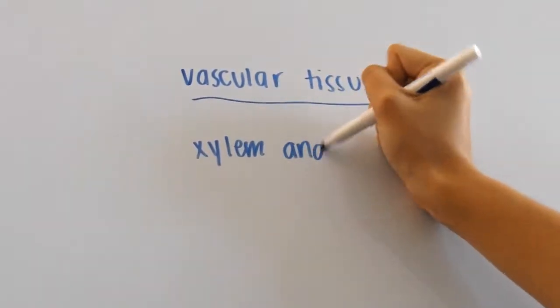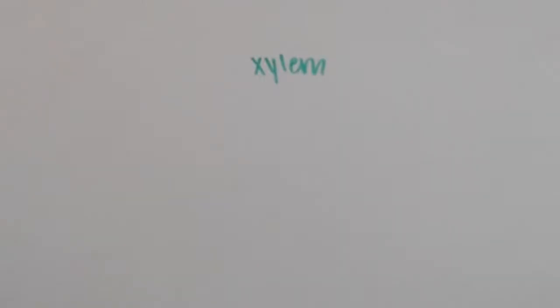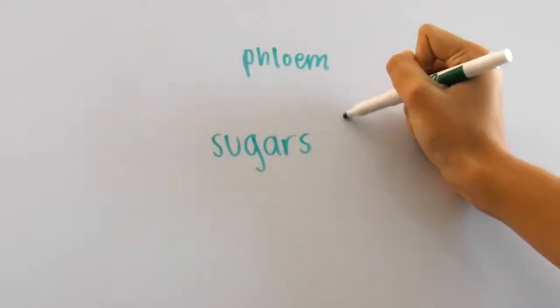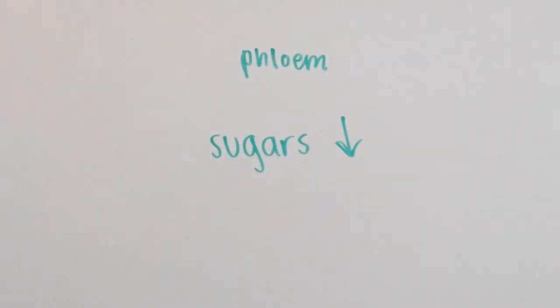The xylem and phloem are two of the vascular tissues in the plant. Xylem tissue transports water upward, and the phloem transports sugars from photosynthesis mainly downward.